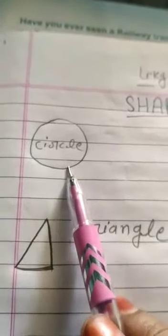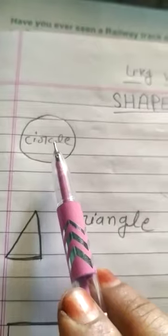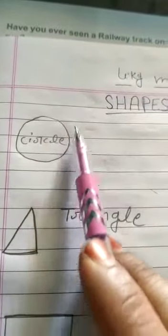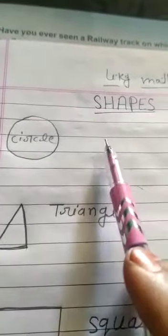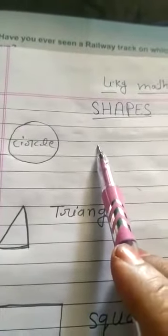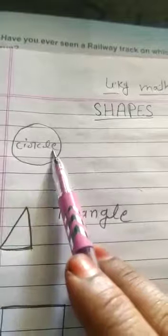The first shape is circle. This is the circle. It has no sides. We have seen circle shapes. Mama ki roti gol gol. So that is circle.